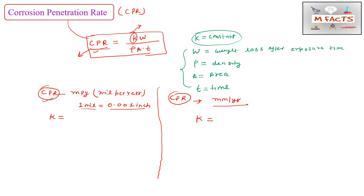The value of k is 534 if we want to calculate CPR in mils per year, and k equals 87.6 if we want to calculate CPR in mm per year. Now let's look at what units to use for the other terms in the formula.